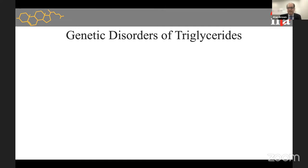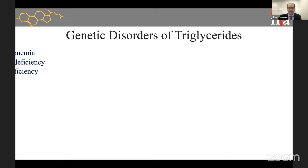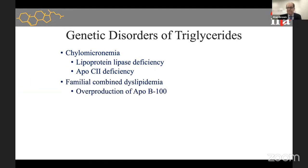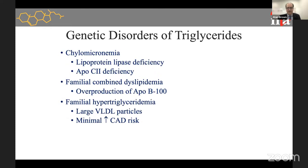Now let's tackle the more complicated subject — genetic disorders of triglycerides. We're going to cover the chylomicronemia syndrome, which is the worst. Remember, chylomicrons have 10 triglycerides to every cholesterol, so if you can't metabolize them, you'll have remarkably elevated triglycerides and frequent episodes of pancreatitis. We'll also cover familial combined dyslipidemia — almost like diabetic dyslipidemia on steroids — and familial hypertriglyceridemia, where the concern is pancreatitis but minimal risk for coronary disease. And then finally, type 3.